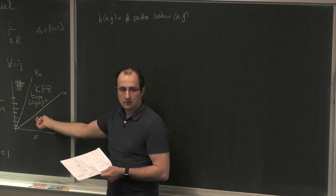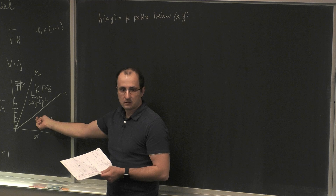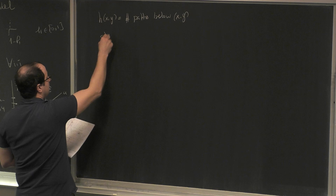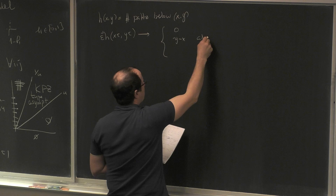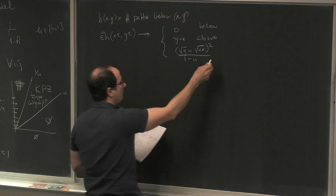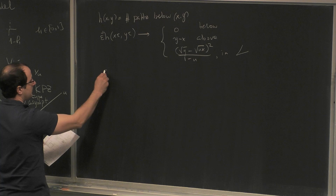Here the height function is zero, here it grows linearly equal to x minus y, and here it's non-linear. Then epsilon-inverse times h(x, y) converges to zero above the cone (or y minus x above the cone), zero below the cone, and inside the cone you get sqrt(y) minus sqrt(ux) squared over (1 minus u).